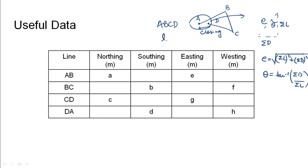This is usually done when we have length and bearing of all the four or five sides, but sometimes we may be given the Northing, Southing, Easting and Westing of the four lines.